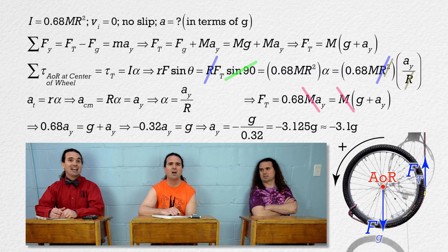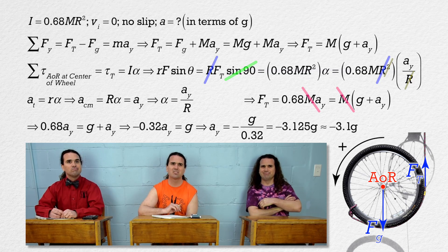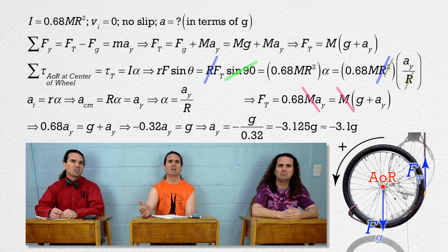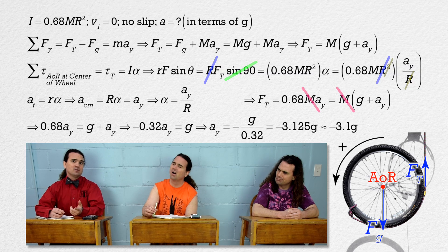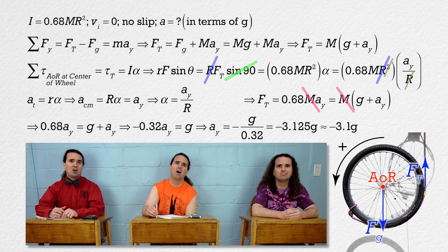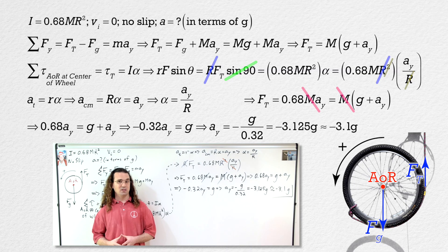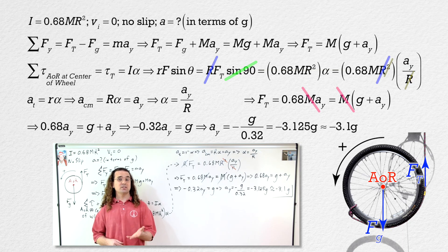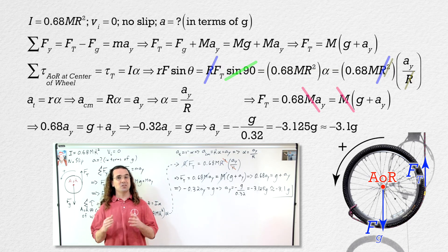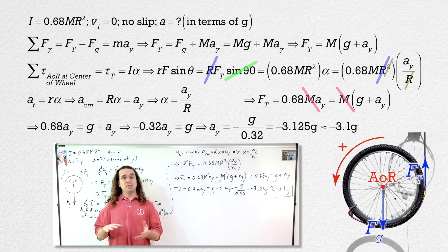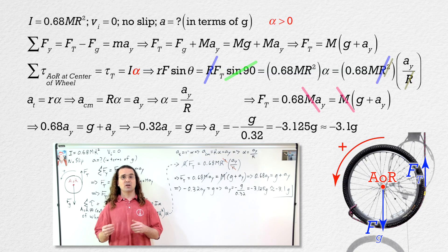That does not make sense. Yeah, the wheel is not going to accelerate faster than the acceleration due to gravity. What about the negative — maybe something is wrong with a direction? A direction seems to often be our mistake. I'm glad you all recognize that this answer is not possible. The wheel will not have an acceleration with a magnitude larger than the acceleration due to gravity, and the mistake does come down to direction.